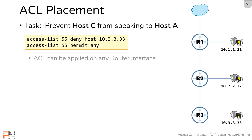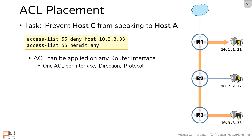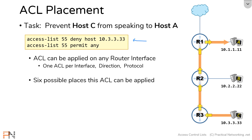We learned from prior videos that you can apply an access list to any router interface — once per interface, per direction, or per protocol. To accomplish this goal, we can apply this access list to any router interface on the path between host C and host A. If we map out the path, that gives us six locations we can apply this access list. But only one of those locations is the best place to apply it, and that's what we're going to talk through together.